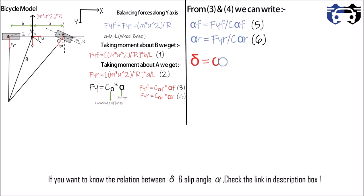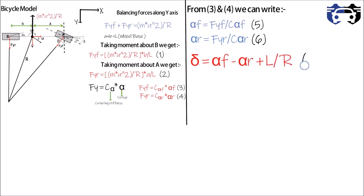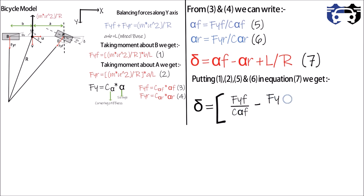We know that delta = alpha_f - alpha_r + L/R. This is our equation 7. Now putting equation numbers 1, 2, 5, and 6 in equation 7, we get delta = Fyf/C_alpha_f - Fyr/C_alpha_r + L/R. Okay, now I'm going to put the values of Fyf and Fyr from equations 1 and 2.